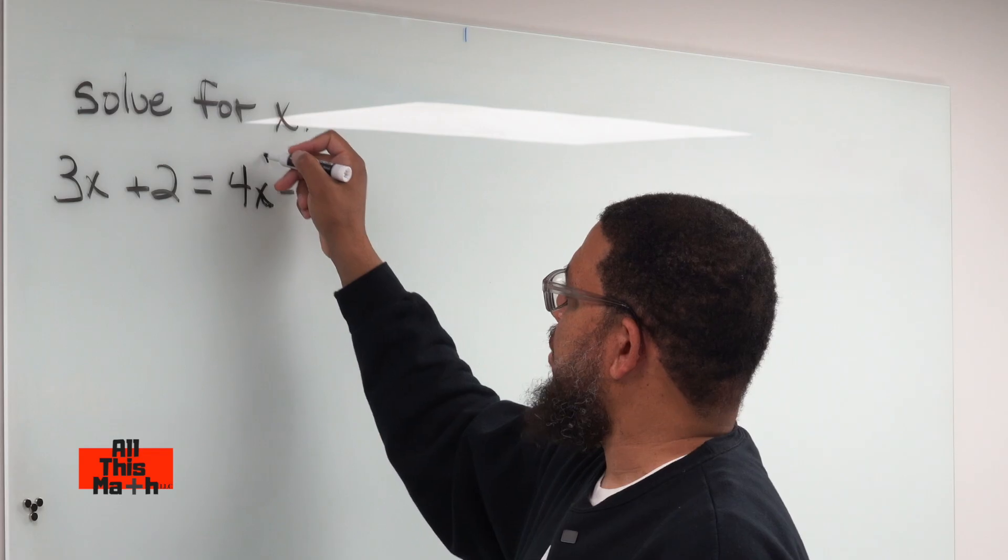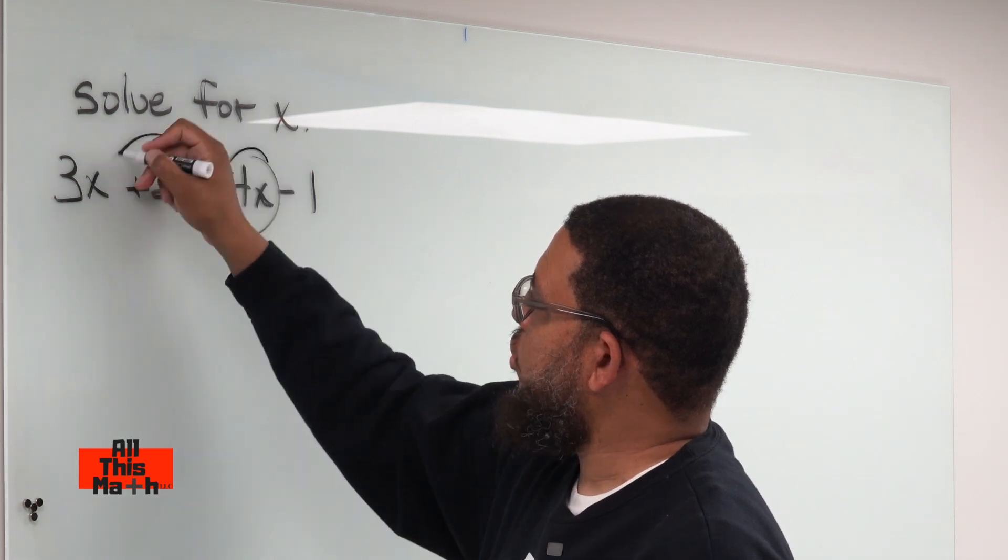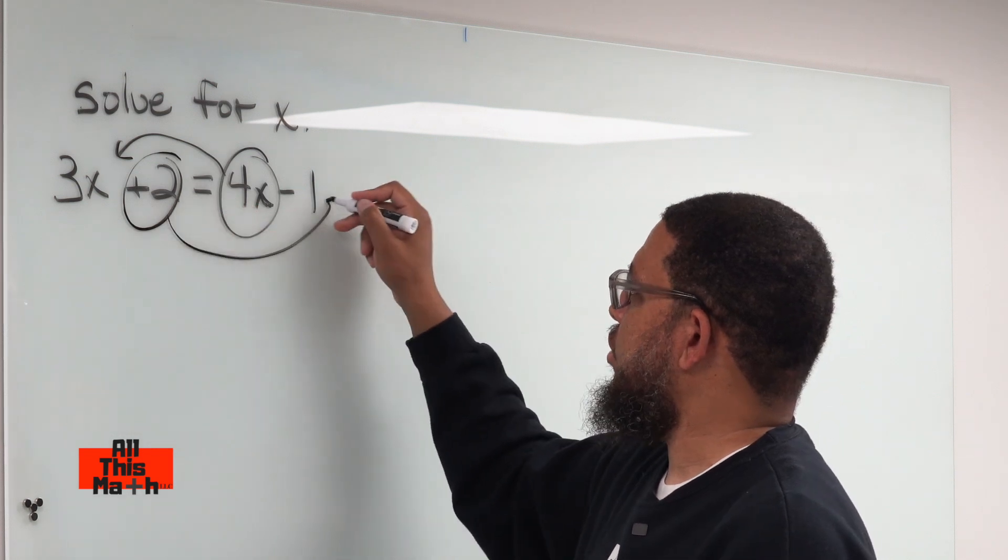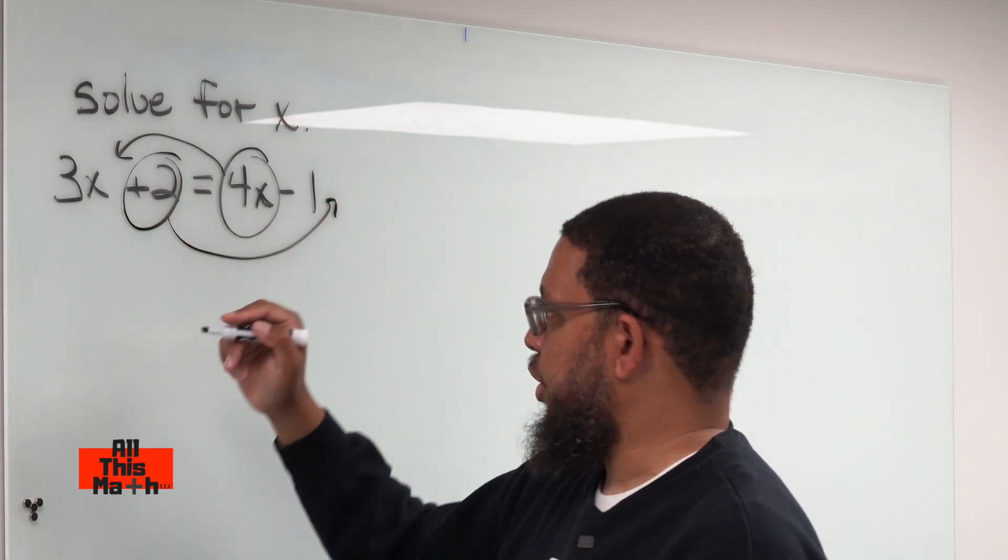So basically what we're going to do is, I'm going to take this 4x, move it over to the other side, that's called transposing. And I'm going to take this 2, move it over to the right side, and that's transposing again.